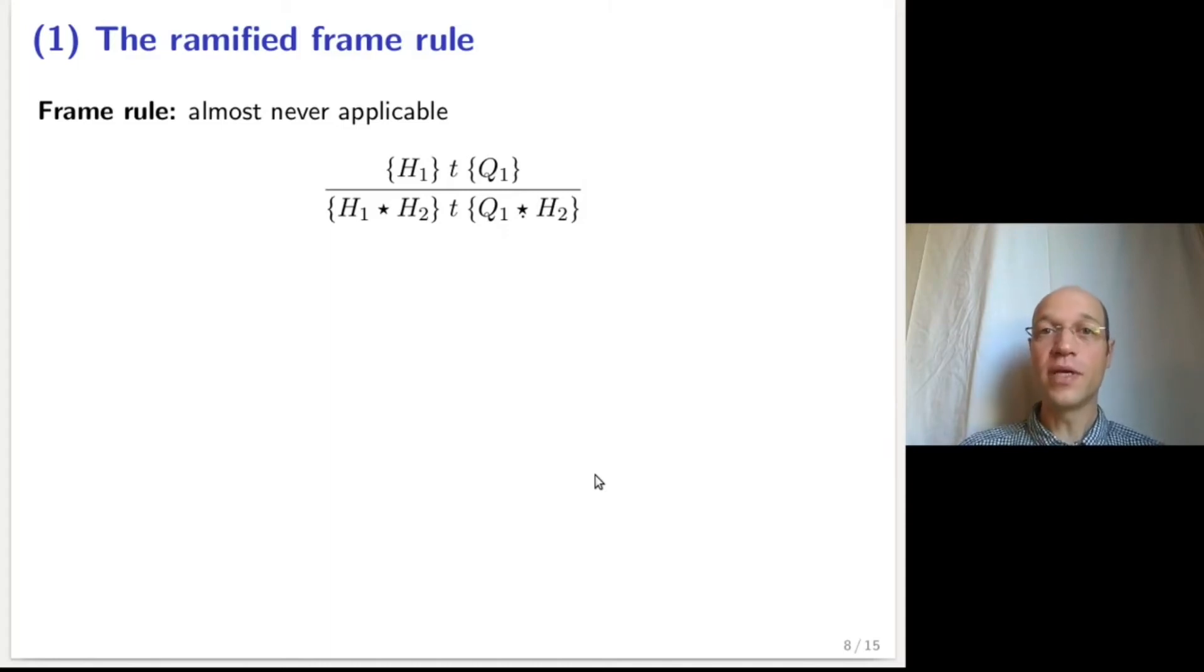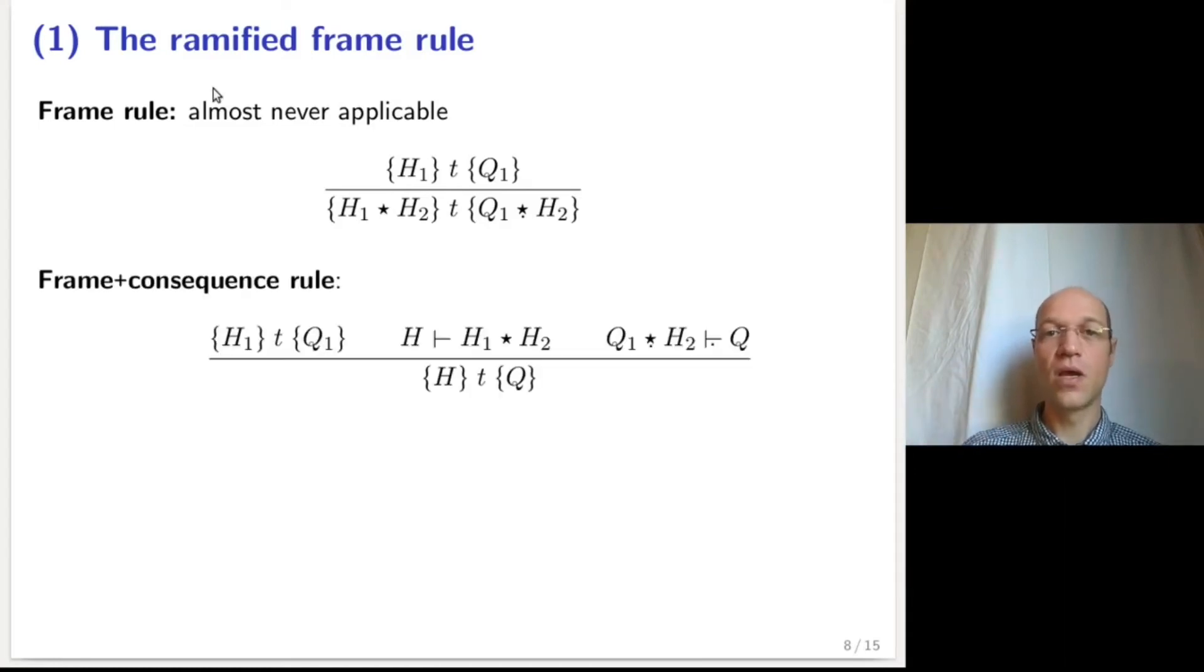Let me begin with a ramified frame rule. The frame rule, in its most standard statement, is almost never applicable. Indeed, you need both the precondition and the post-condition to syntactically feature a star h2. Thus, in practice, one would typically use a combined rule that integrates the rule of consequence.